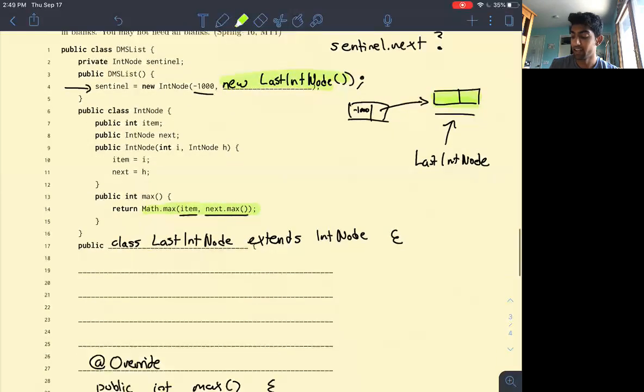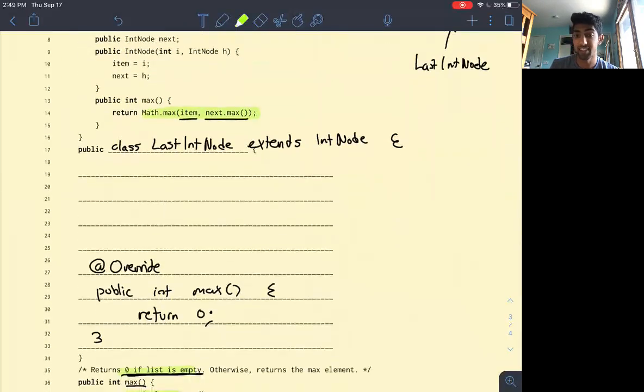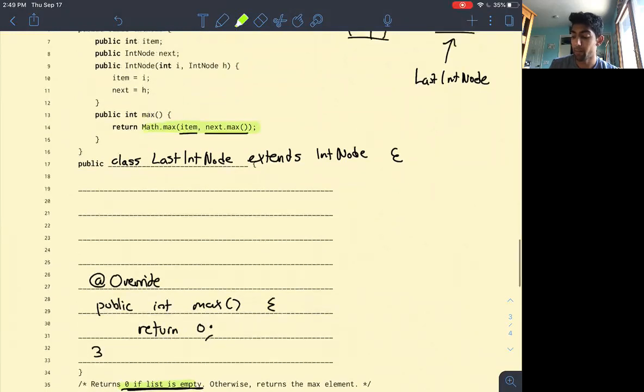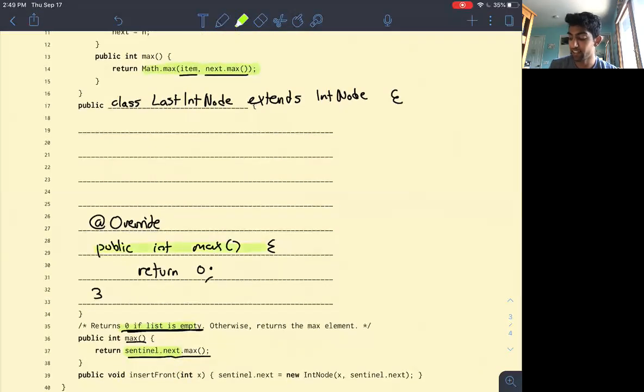what we can do is create a last int node instance, which extends the int node class. So instead of calling the max function of the int node class, it'll call the max function of the last int node class, right, here, and that'll return 0.